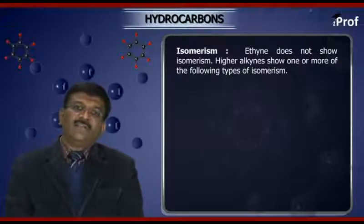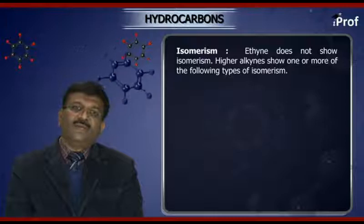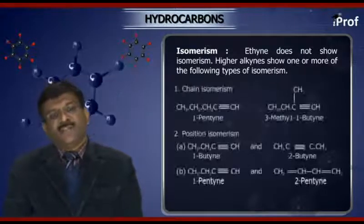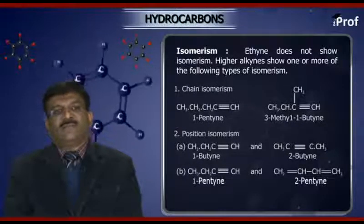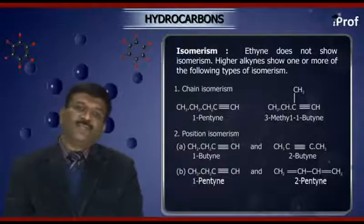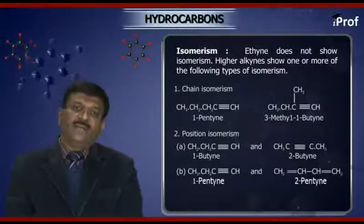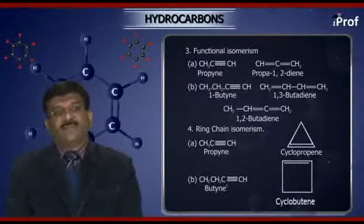Isomerization. Ethene does not show isomerization, whereas higher alkynes show one or more of the following types of isomerization. Chain isomerization: 1-pentyne shows isomerization with 3-methyl-1-butyne. Position isomerism: 1-butyne, 2-butyne, 1-pentyne, 2-pentyne.